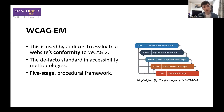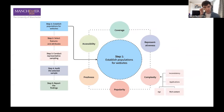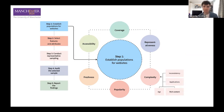Today we're going to be focused on step one of WCAG EM. There are five steps, and each step can feed back into step one, step two, and so on. On the screen is a diagram of our methodology. On the left are five sections that run parallel to WCAG EM. Step one is in a large circle, surrounded by six smaller circles: coverage, representativeness, complexity, popularity, freshness, and accessibility.